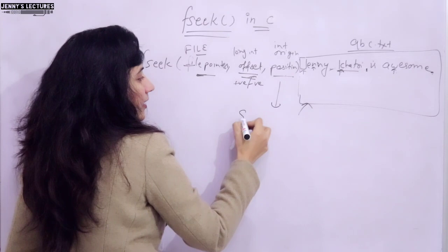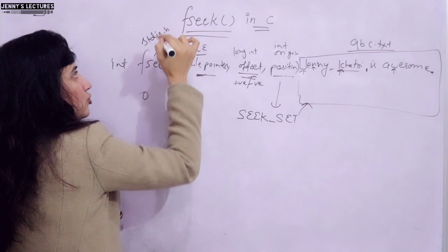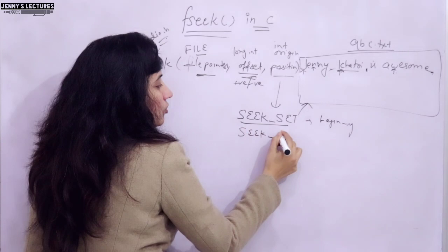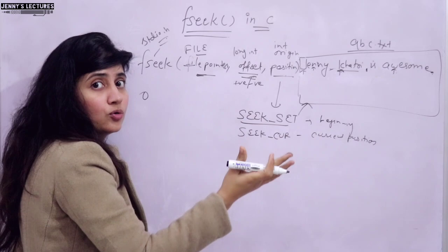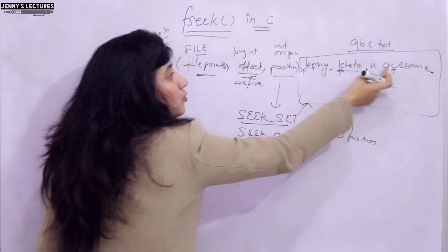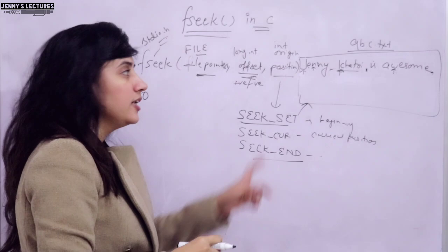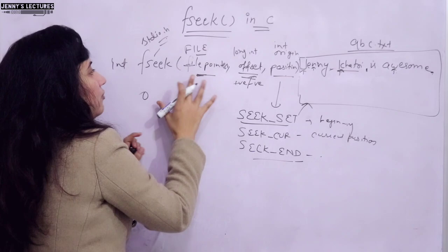The position argument specifies from which position you want to add the offset. There are three predefined values from stdio.h: SEEK_SET means the position is the beginning of the file; SEEK_CUR means the current position of the file pointer - you can move forward or backward from there; and SEEK_END means the end of the file, from which you can move backward. I will show you how to use all three in a program.